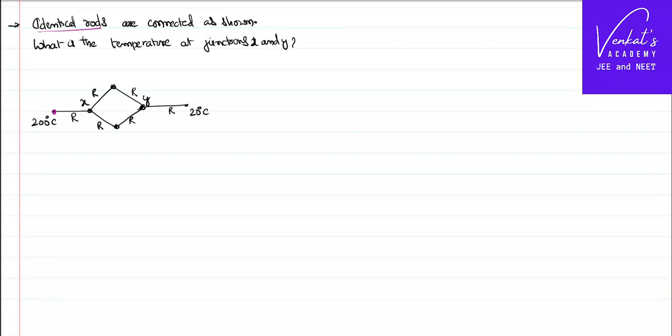We are solving a problem here. The problem says identical rods. When somebody says identical rods, it means to say this resistance is same for all of them. Their length is same, their area of cross section is same, their coefficient of thermal conductivity—all these parameters are same. That is a given condition.